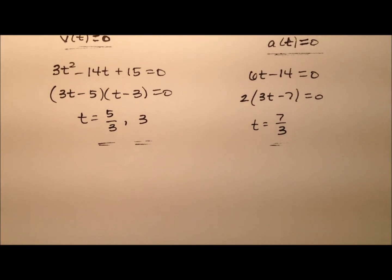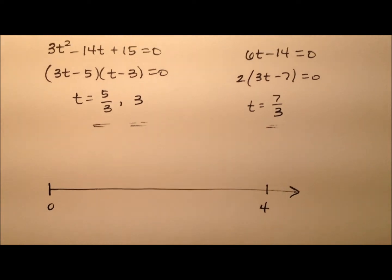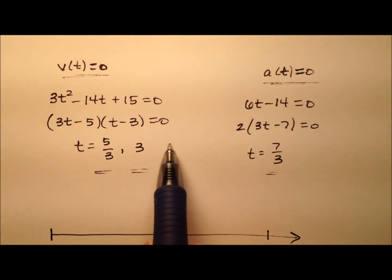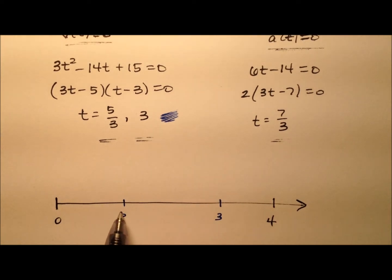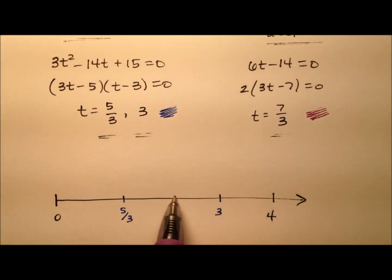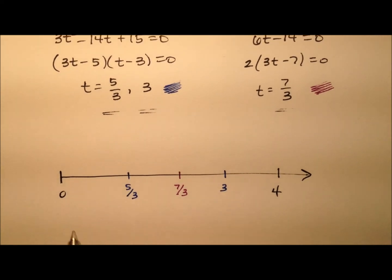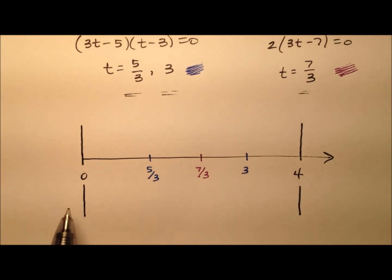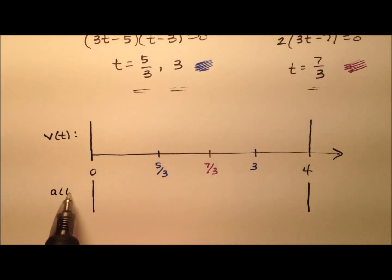To get a nice visual representation, we'll draw a number line starting at 0 and ending at 4, since that's our interval. For the velocity, we'll use the color blue, and for the acceleration, purple. We'll mark the critical numbers: 5 thirds and 3 for velocity, and 7 thirds for acceleration. I'm going to break this number line into a top half focused on velocity and a bottom half focused on acceleration.